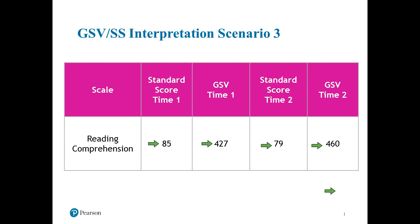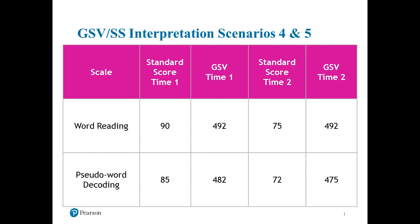The final two scenarios both look at a decrease in standard score from time one to time two. For word reading, if the growth scale value did not change, the child is not gaining any additional word reading skills over time and is falling further and further behind their peers — this child I would be very concerned about. The bottom, less common scenario shows an actual skill drop-off in GSV, which oftentimes comes from medical conditions or brain injuries where actual skill is being lost.